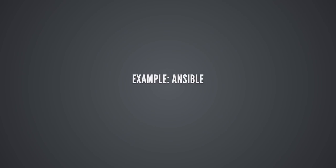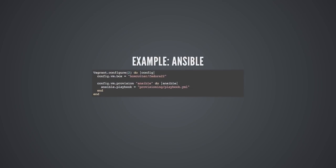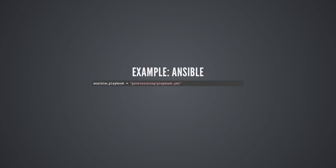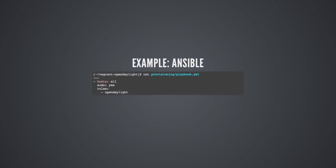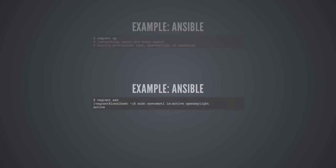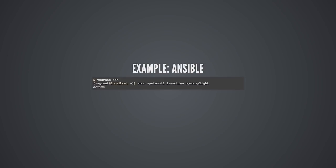Third example - this one uses Ansible. First line is similar: we're starting with a Fedora 22 base box. The second chunk is the configuration for the Ansible provisioner - we're pointing at a playbook file. It's pretty simple: we're saying for all hosts, as root, install OpenDaylight, which is a project I contribute to, and accept all the defaults. When we do vagrant up we do the same networking magic, then run our Ansible provisioner that installs OpenDaylight. We connect with vagrant SSH and use sudo systemctl status opendaylight to verify that our OpenDaylight systemd service is running.